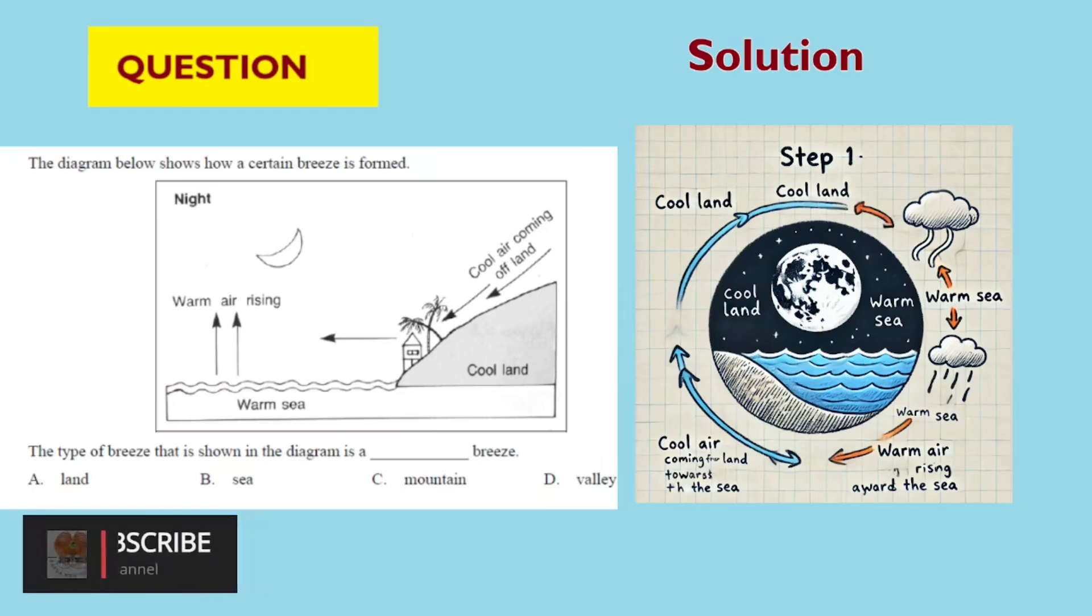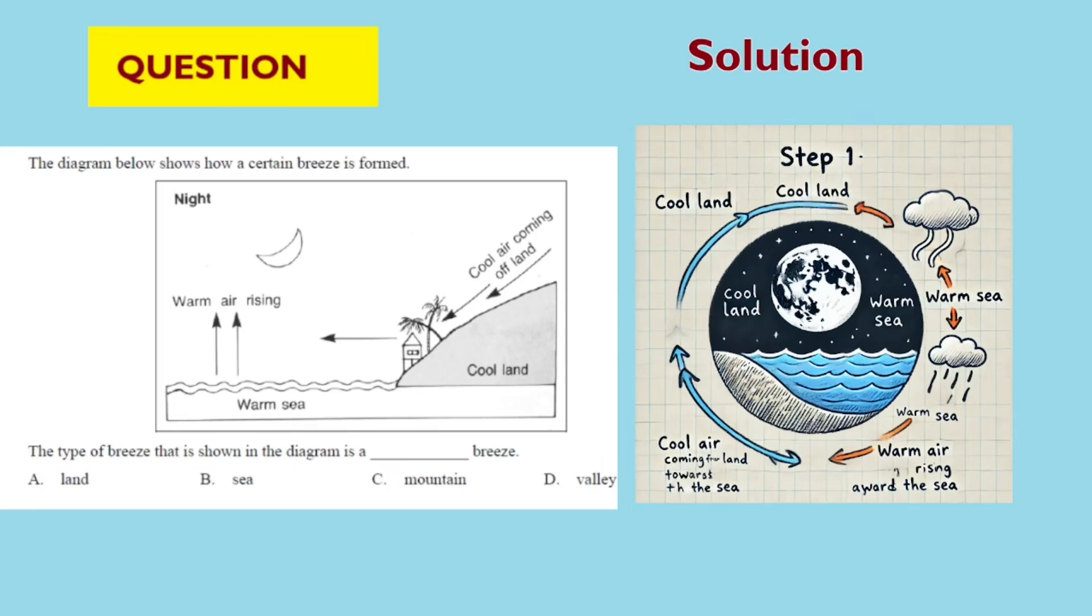Let's explore the question and arrive at the answer. First, observe the diagram. The diagram shows air movement during the night, indicated by the moon, and the labels night and cool air coming off land.